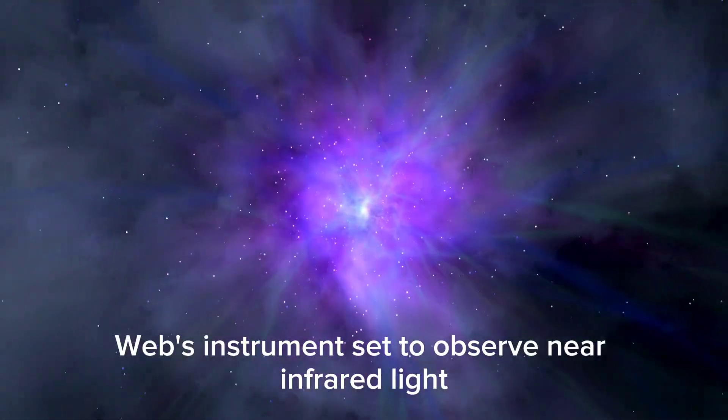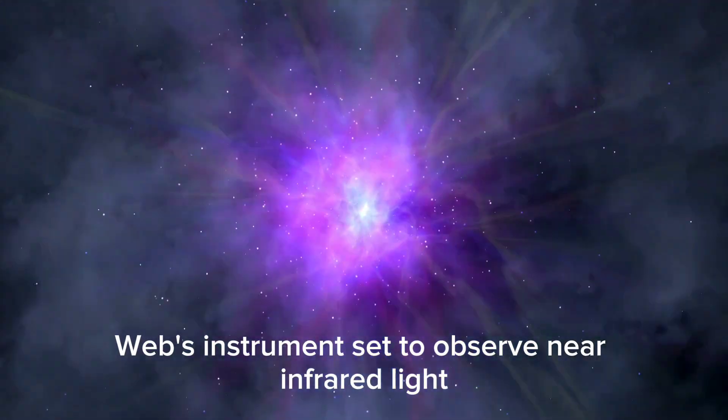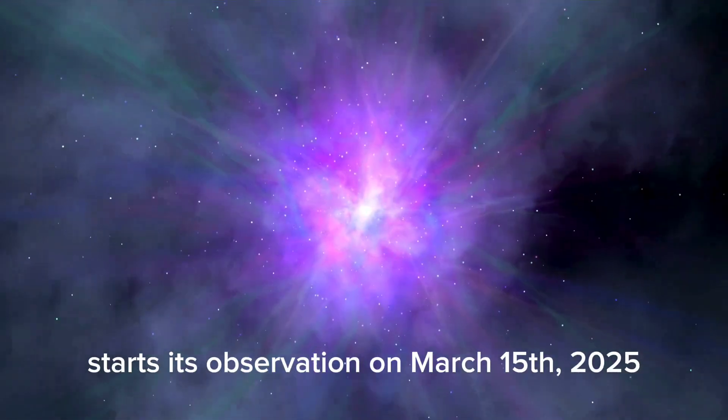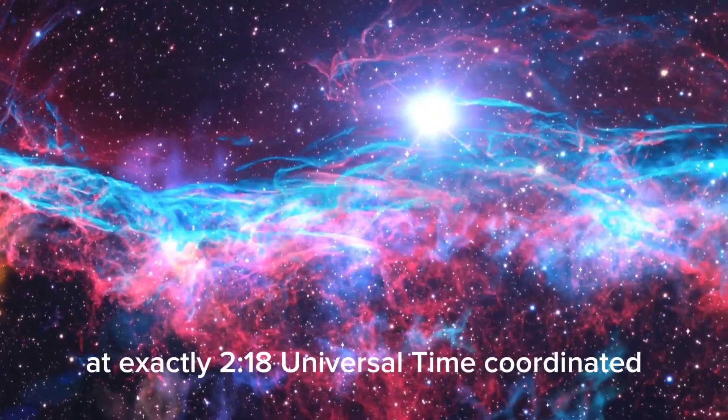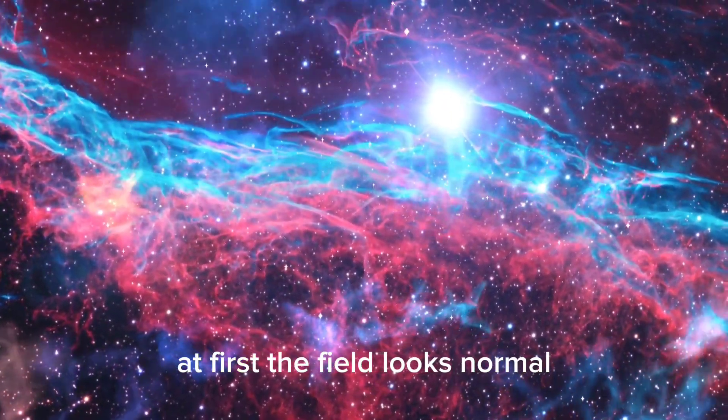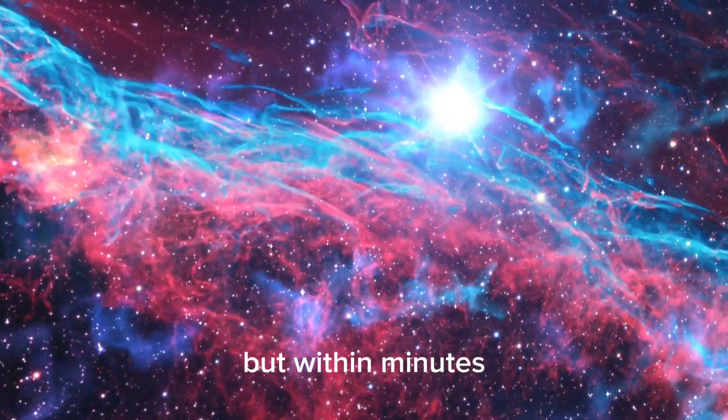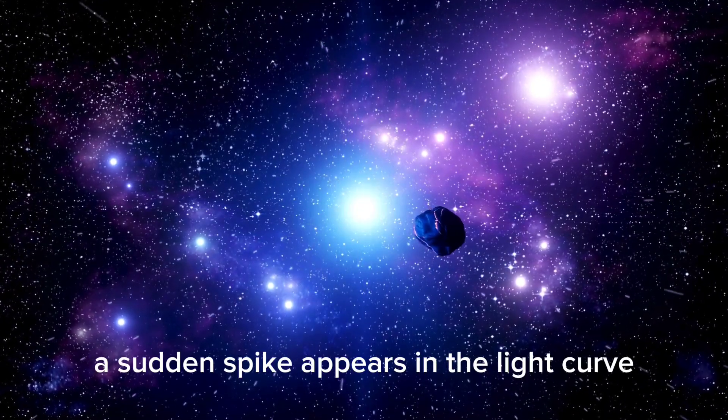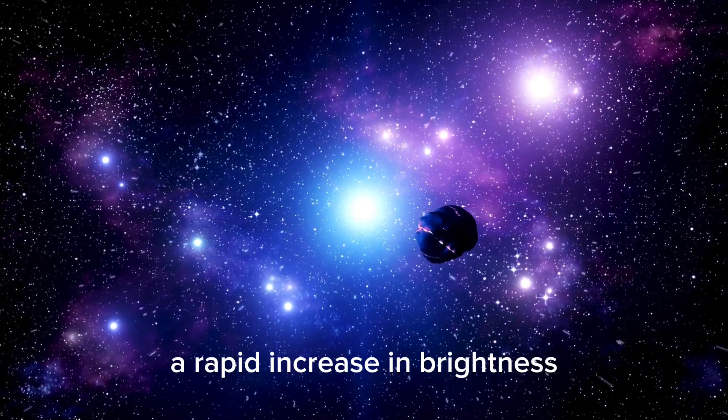Imagine this. Webb's instrument, set to observe near-infrared light, starts its observation on March 15, 2025, at exactly 2.18 universal time coordinated. At first, the field looks normal, but within minutes, a sudden spike appears in the light curve, a rapid increase in brightness.